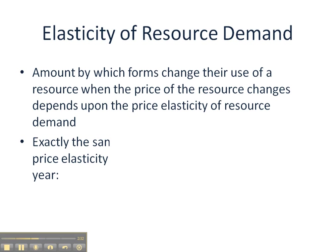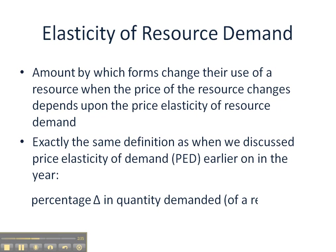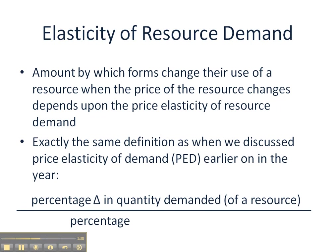Elasticity — the concept of changing quantity demanded, in this case for a resource, relative to changes in the price of the resource — likewise remains the same. The calculation for price elasticity of demand of a resource is identical to the PED calculations we've done earlier. The amount by which firms change their use of a resource when the price of the resource changes depends upon the price elasticity of their resource, calculated as percentage change in quantity demanded of a resource divided by the percentage change in the price of the resource. This is all similar — identical, actually — to product markets.